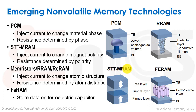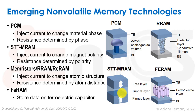The next-generation SOT-MRAM (spin-orbit torque MRAM) has speeds approaching SRAM, making it a candidate for embedded low-level cache replacement, such as L3 or L4 cache.